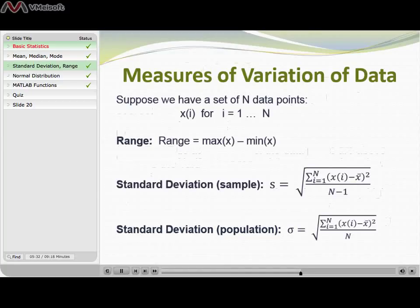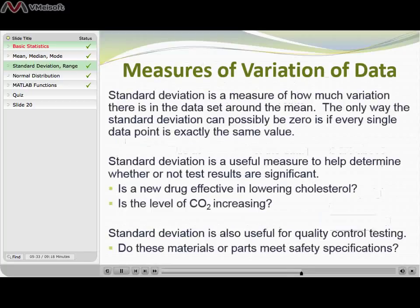With normally distributed data, the probability of the data being within one standard deviation is 68.3 percent. The probability that your data is within two standard deviations is almost 95 and a half percent, and the probability of being within three standard deviations is 99.73 percent.